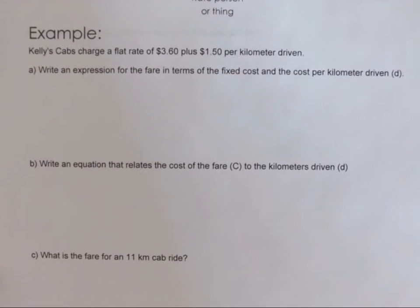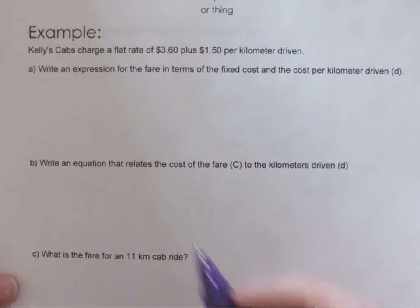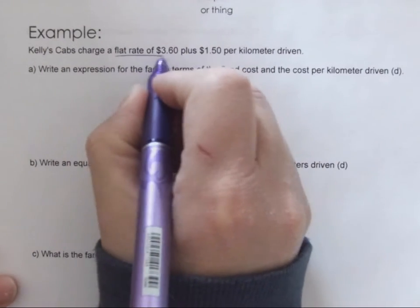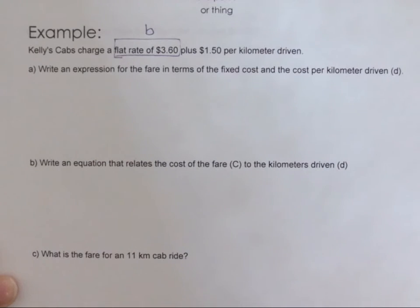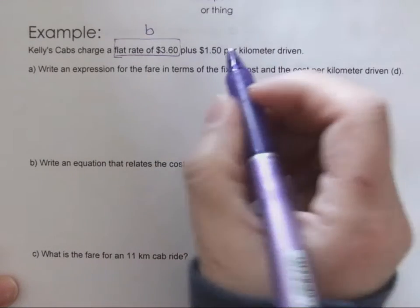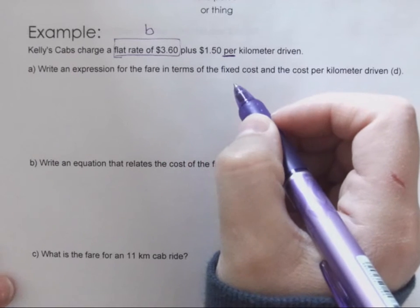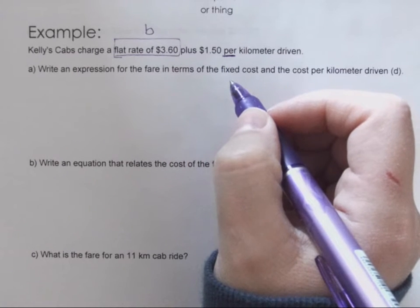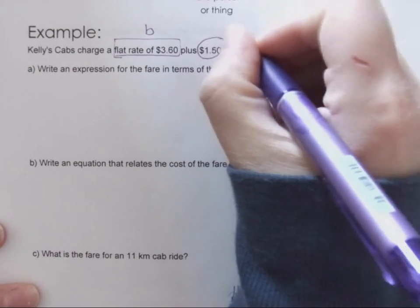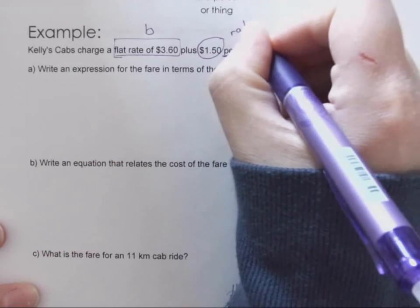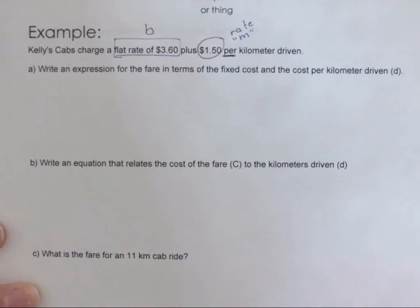Okay, so in the first example, Kelly's Cabs charges a flat rate, so as soon as I see flat rate I know that's my b value. And then it's a dollar fifty, so this word here 'per', that's the thing that's gonna help you clue in that the dollar fifty is the rate, so that's the m value. The per - the word per - so it's per kilometer, per person, it's for every one of those things.